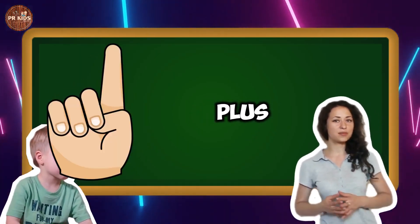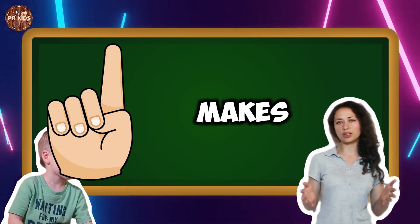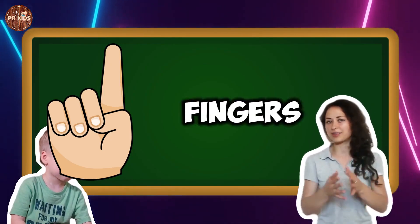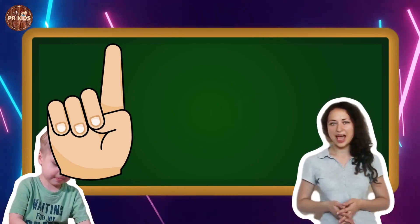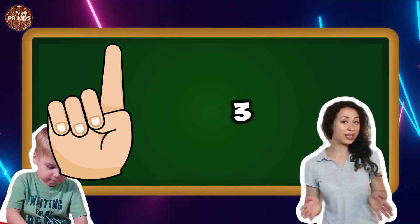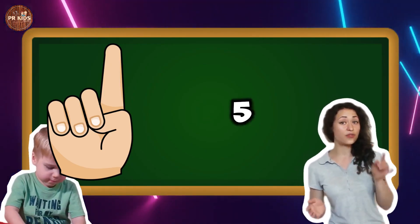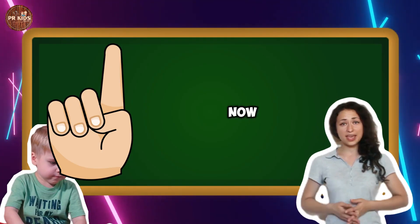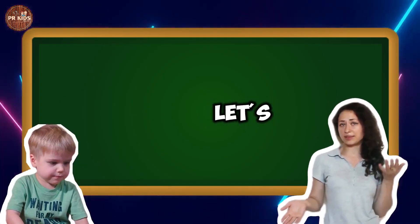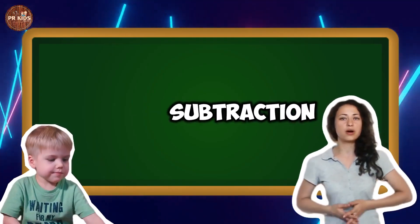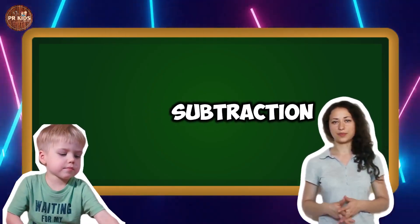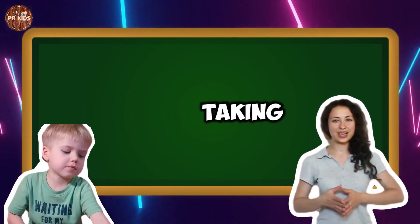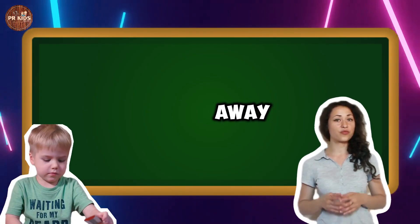One finger plus two fingers makes three fingers. Two plus three makes five. Now let's learn subtraction. Subtraction means taking things away.